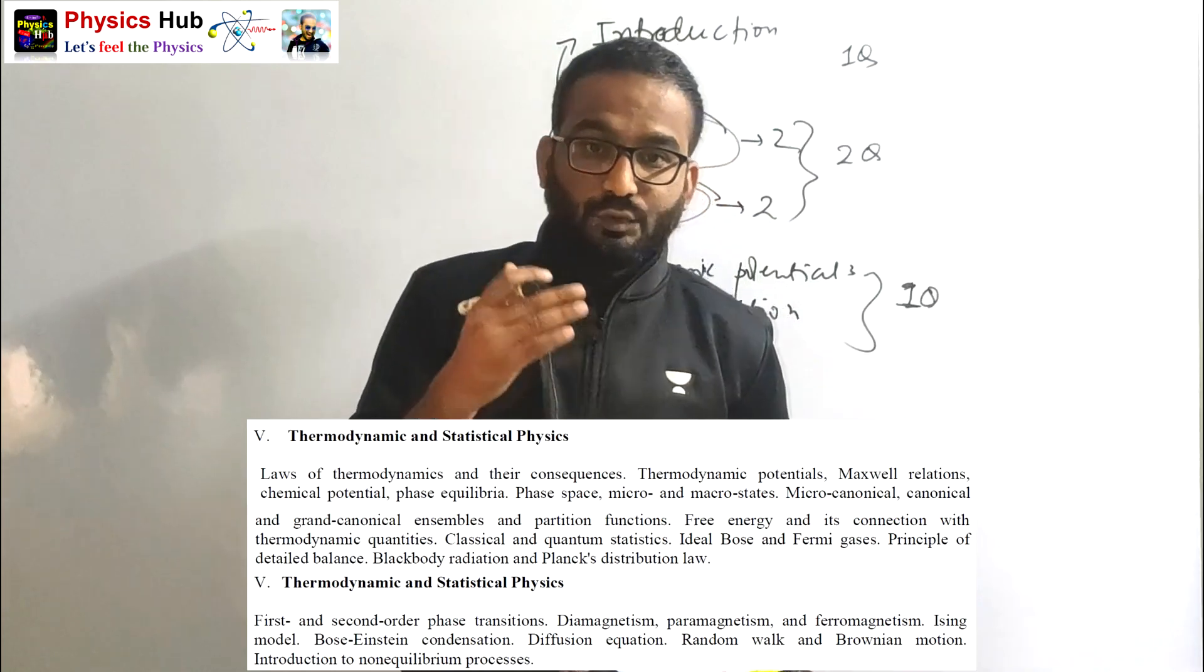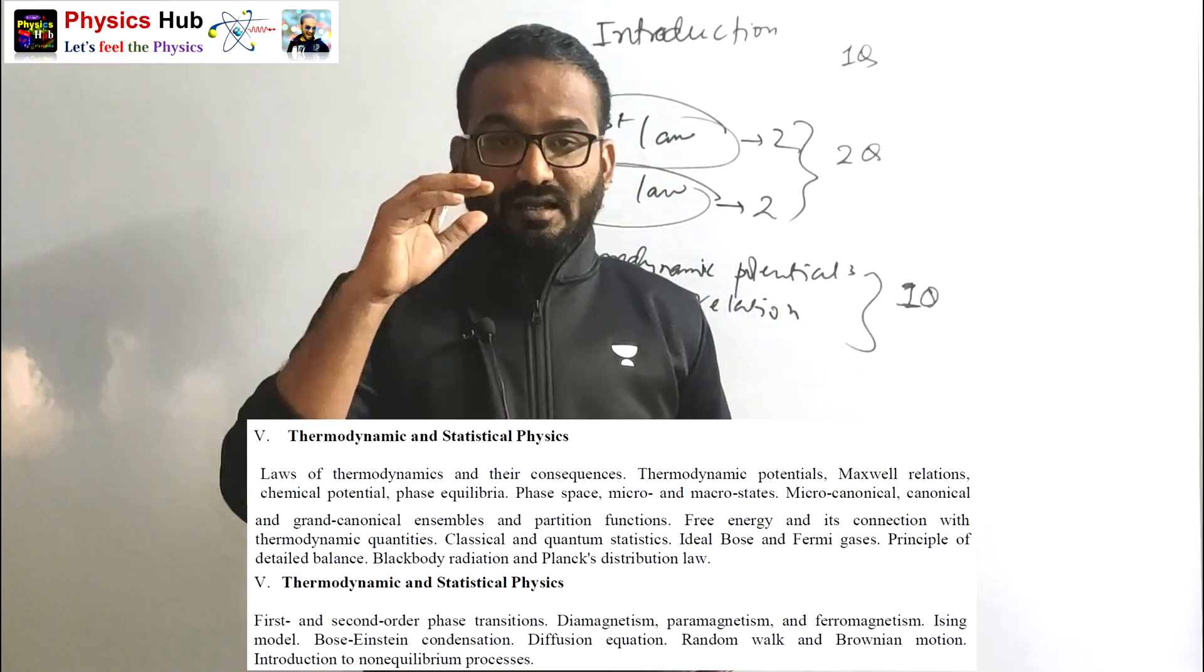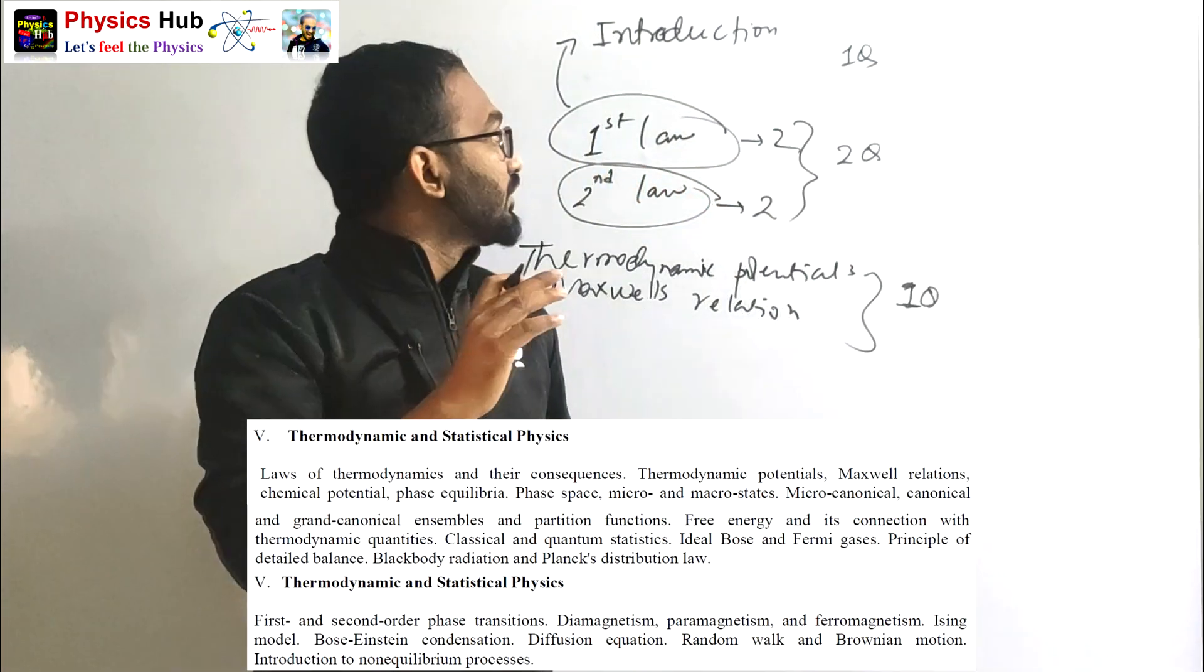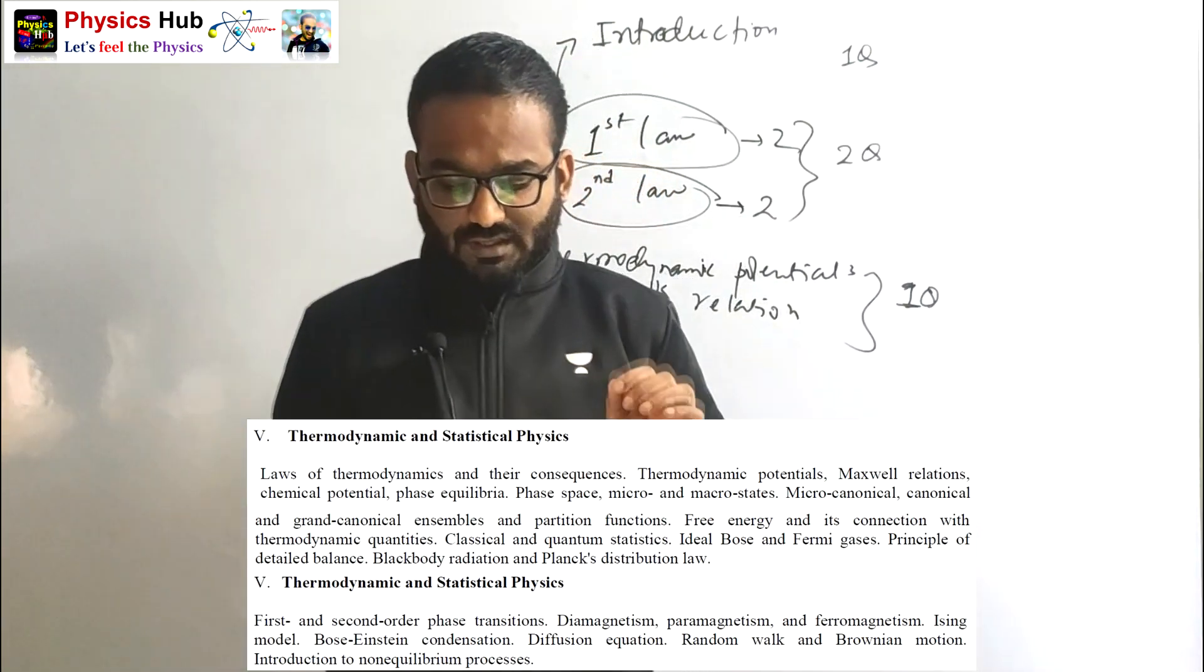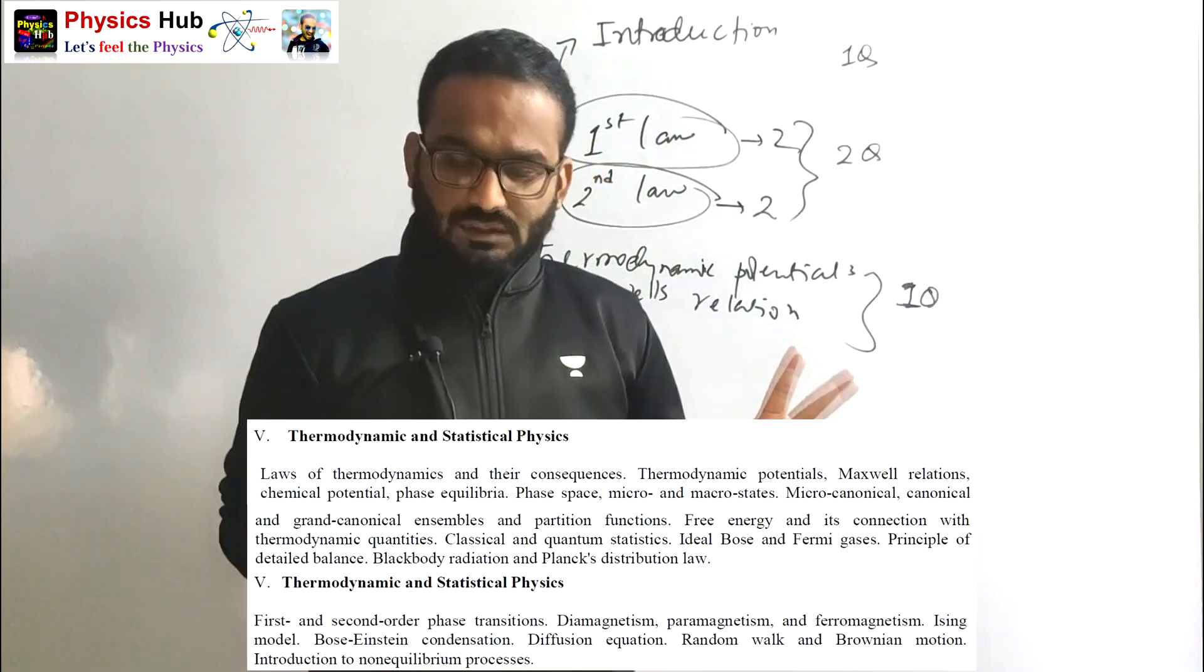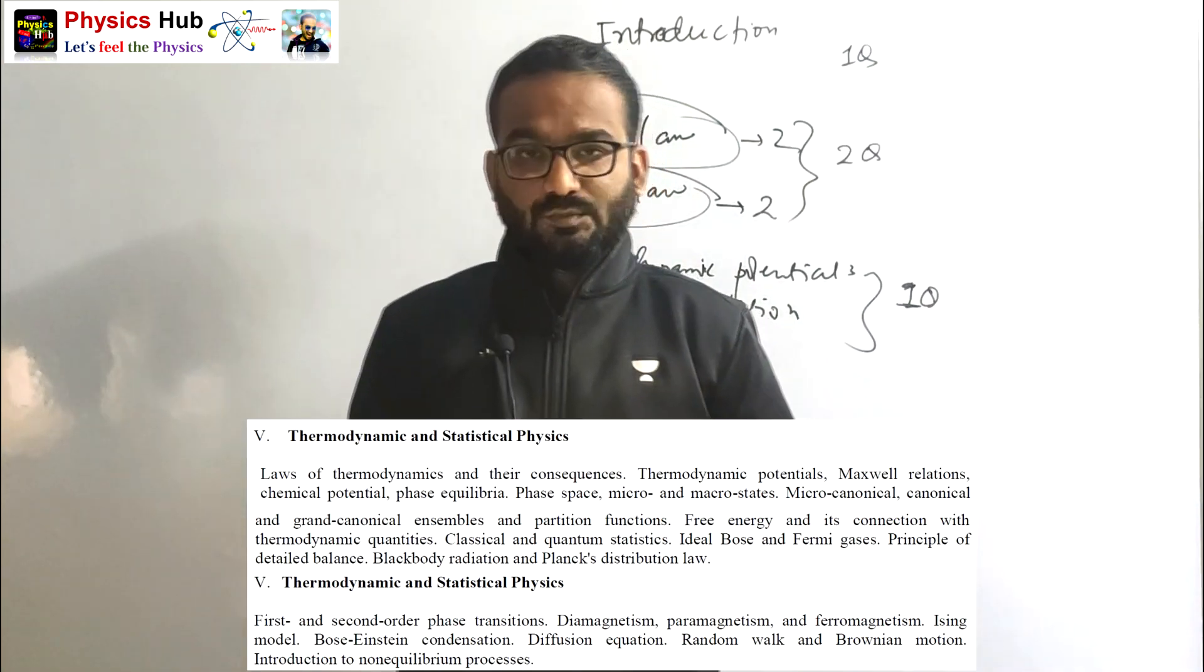But you have to have a smart approach, a strategic approach, to prove this core portion. Next is the advanced portion. You see, phase transitions - first and second order phase transitions - can take one or two classes. Then magnetism portion: diamagnetism, paramagnetism, ferromagnetism.